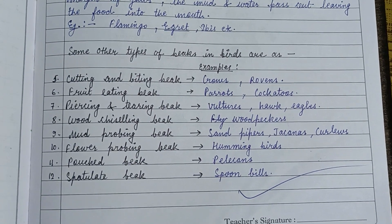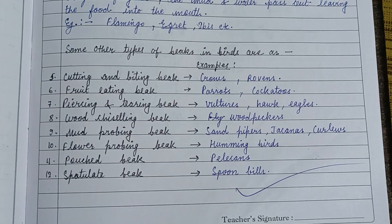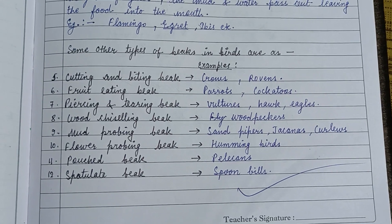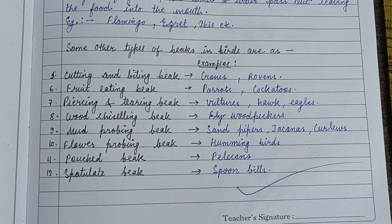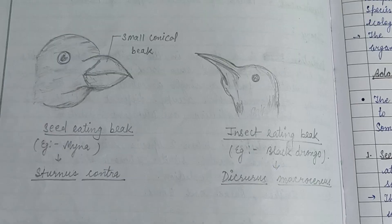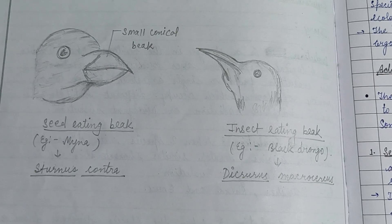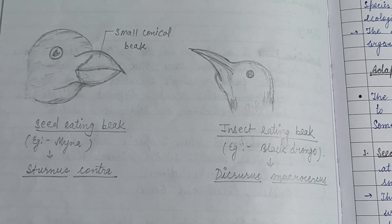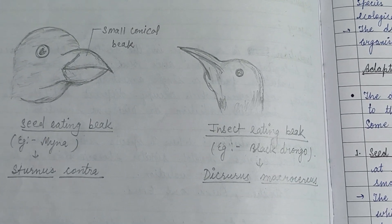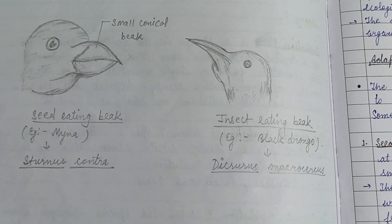Some other types of beaks include cutting and tearing beak — for example, crows and robins — fruit eating beak such as parrot and cockatoo, and piercing and tearing beak such as vulture, hawk, and eagles. Mayna is an example of the seed eating beak, while the black drongo is an insect eating beak.